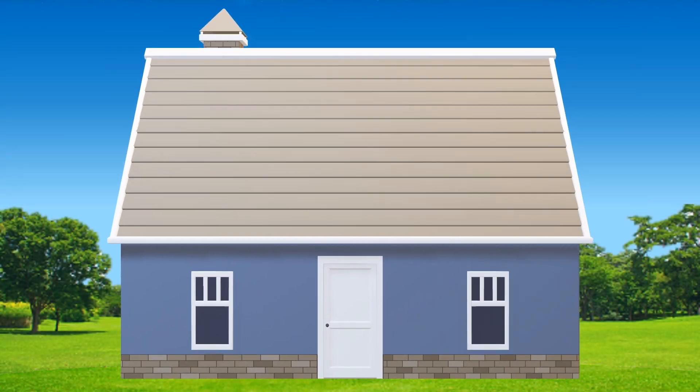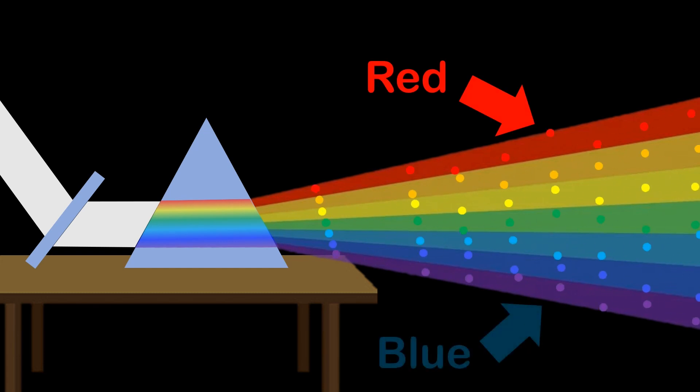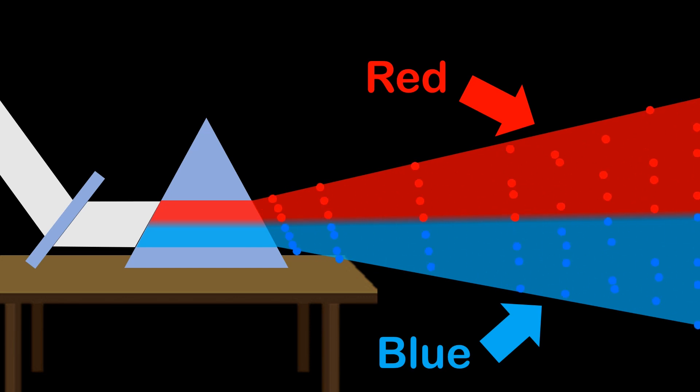So why is the sky blue? Sunlight contains all the colors of the rainbow, from red all the way to blue. But let's imagine that it only contains red light and blue light.